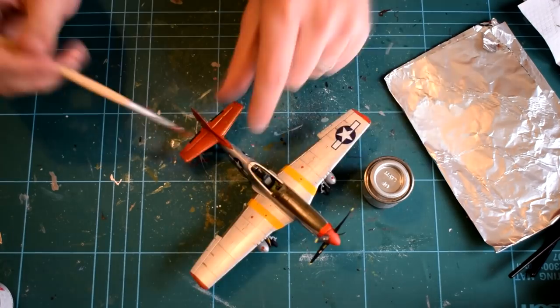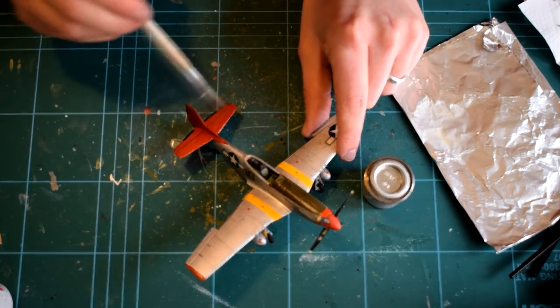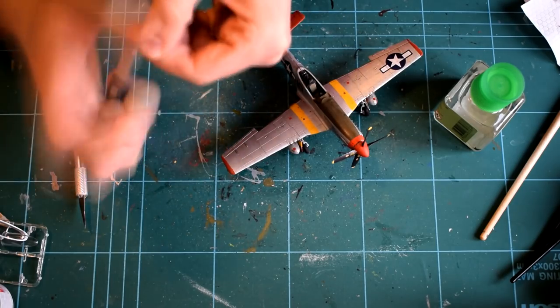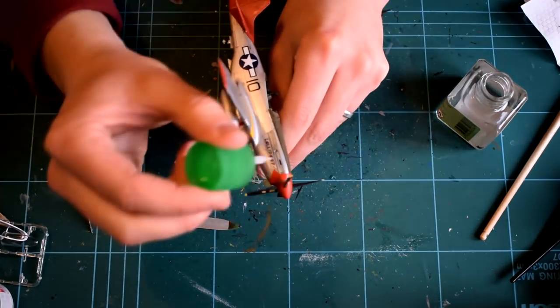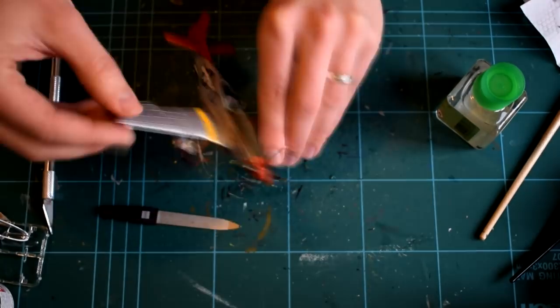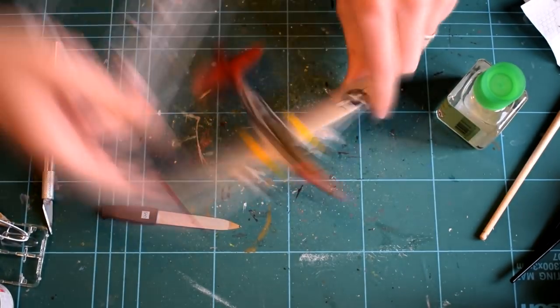When the paint had dried, I added the engine exhaust to the model. These had been left off until now, in order to make the previous painting stages easier, and to prevent any stray blobs of paint from spoiling their finish.